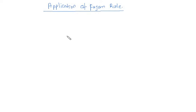Hey, what's up guys, this is Yasser with another video. As I've promised, we'll make a video on the application of Fajan's Rule. This is the application — Fajan's Rule is for covalent character of an ionic bond. As the covalent character increases, there are many properties which are being changed.